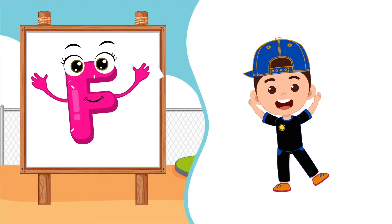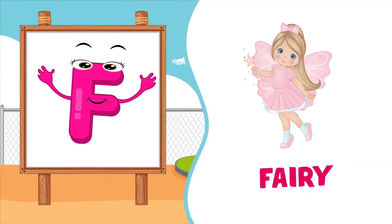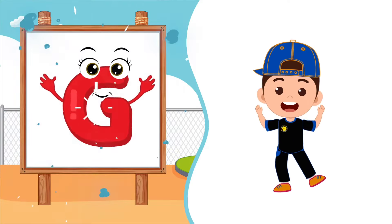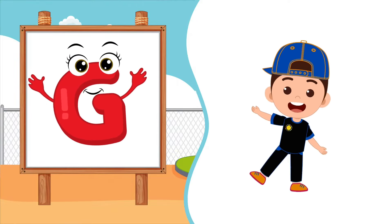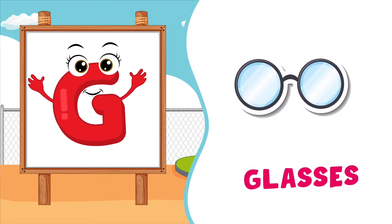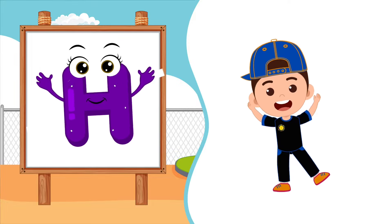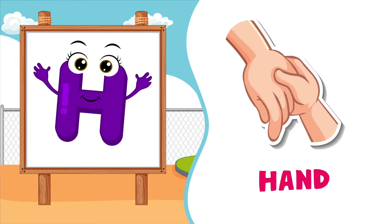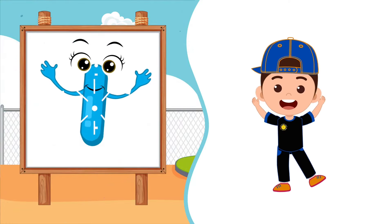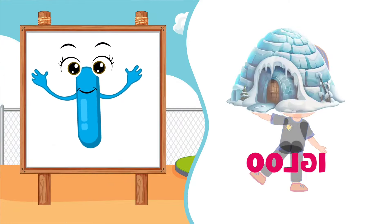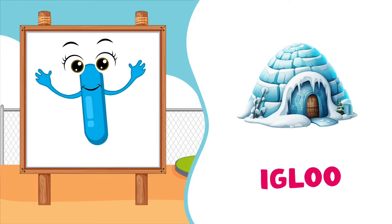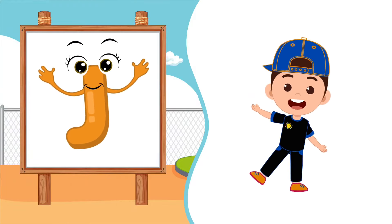F is for Fairy, F-Fairy, F-Fairy. F, Fairy. G is for Glasses, G-Glasses, G-Glasses. G, Glasses. H is for Hand, H-Hand, H-Hand. H, Hand. I is for Igloo, I-Igloo, I-Igloo. I, Igloo.